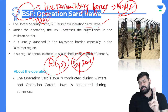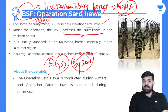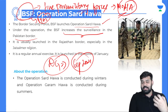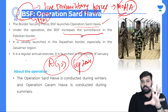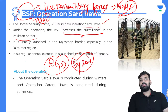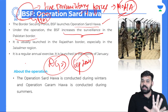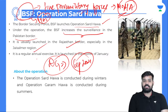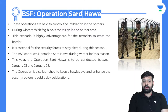BSF launched Operation Sardhava. Two important operations conducted by BSF are Sardhava and Garmawaj. Sardhava is conducted during the winter season, and Garmawaj is conducted during the summer season. Operation Sardhava increases surveillance on the Pakistan border due to infiltrations. Since ceasefire violations by Pakistan have decreased, they resort to proxy wars — sending militants through border infiltration. It is usually launched in the Rajasthan border, especially in the Jaisalmer region, in the month of January.